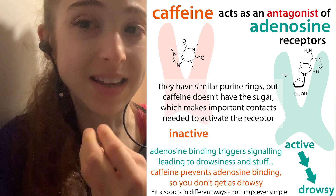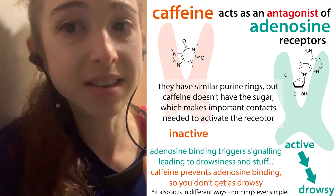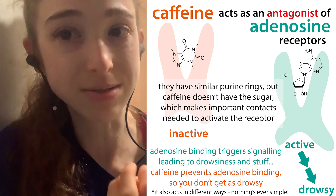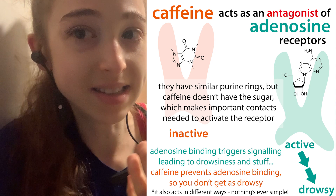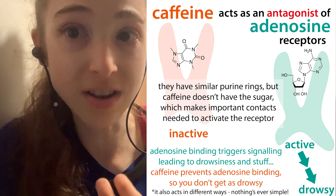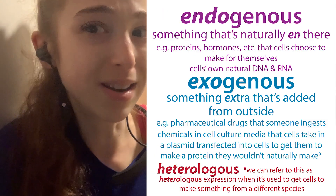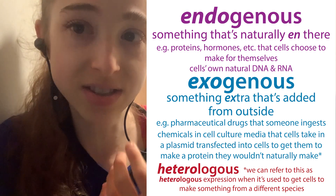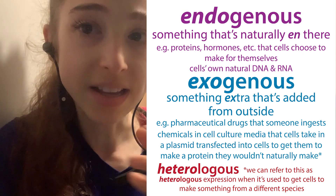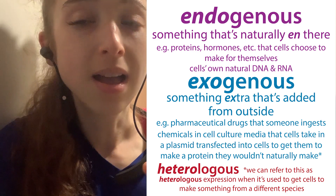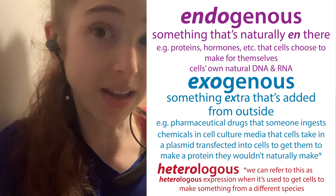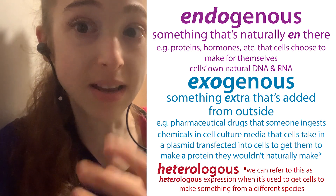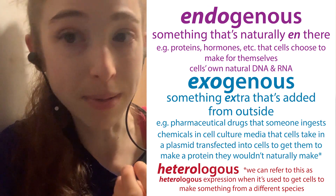Caffeine is acting as an antagonist, and in this case it's an exogenous antagonist because our body is not making it — we're taking it from outside. Whereas adenosine would be the natural or endogenous ligand. We could also add adenosine from outside, and then we would call it exogenous. So endogenous is something already in there that the body's making for itself, and exogenous is something extra that's added, which may or may not be the natural ligand for that binding site.